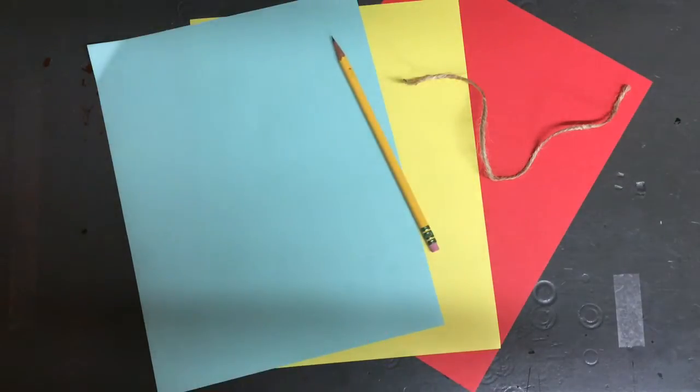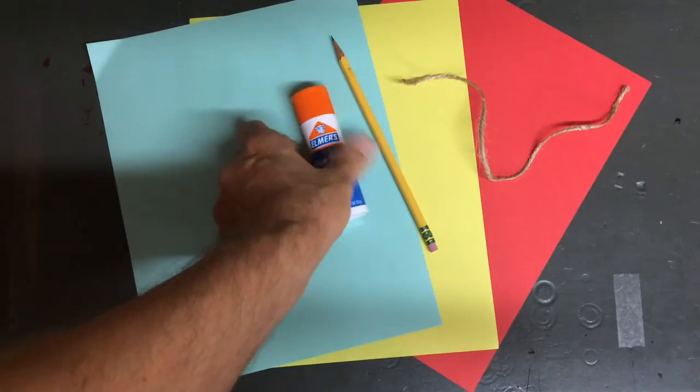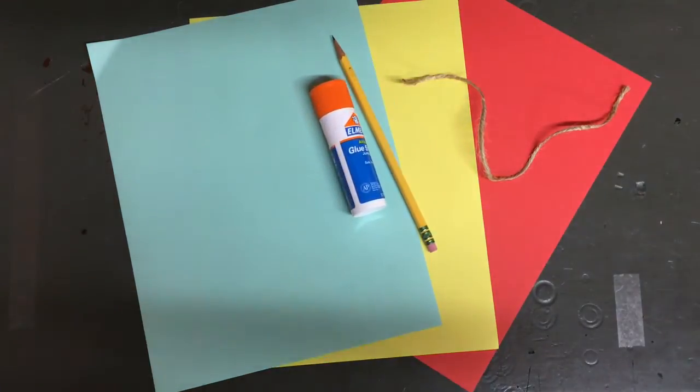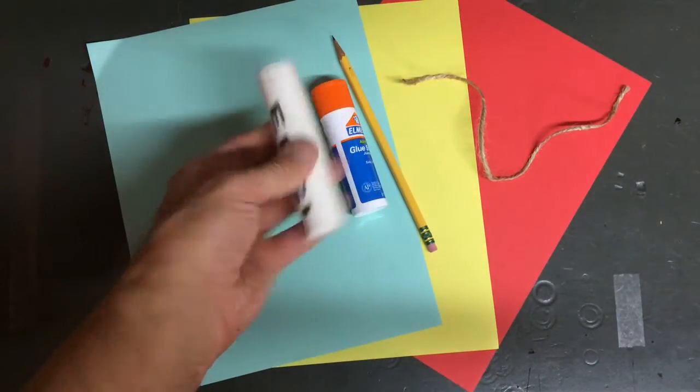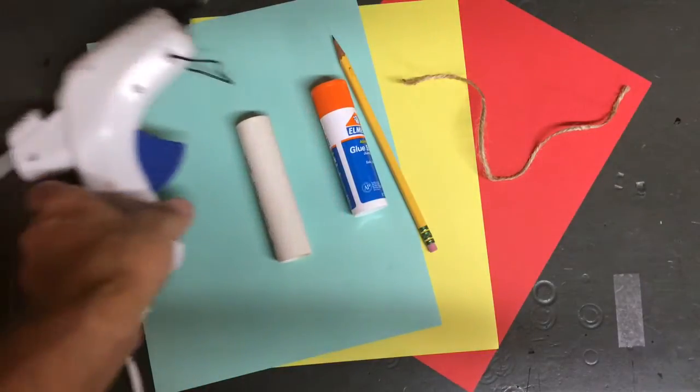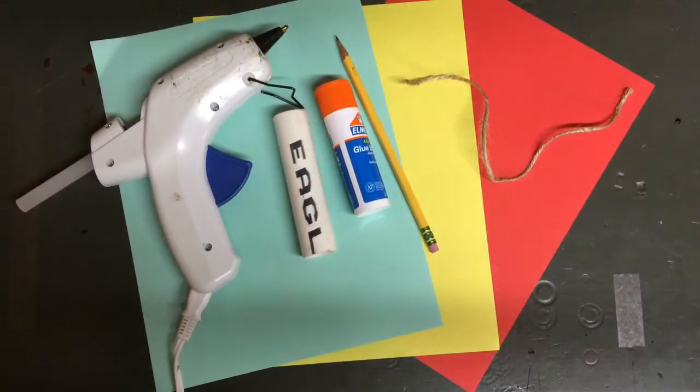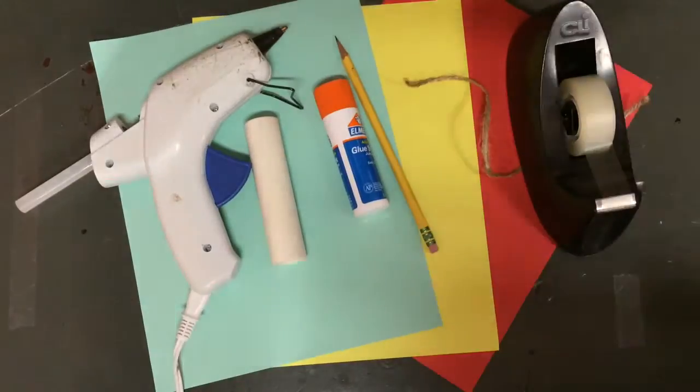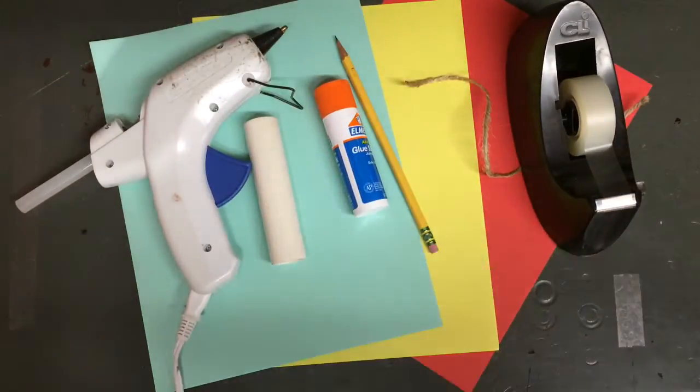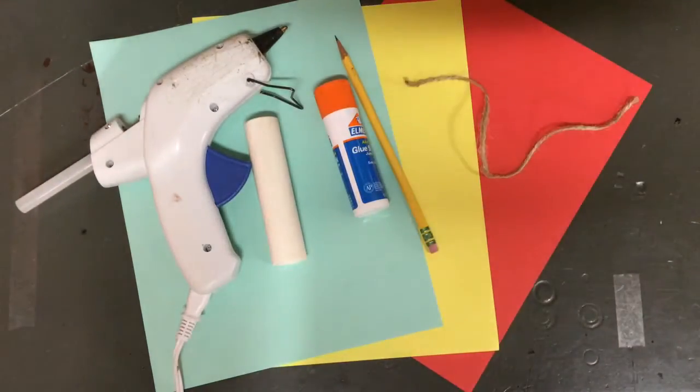You will need a pencil that we're going to use just as a form. You need a cylinder, something like a large glue stick, or you can use a piece of pipe. You will also need a hot glue gun, and also you need some scotch tape. So those are all the pieces, all the parts.